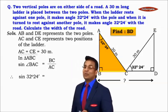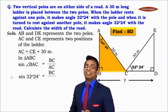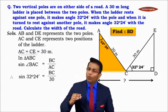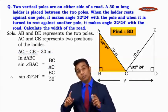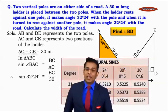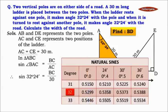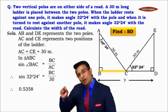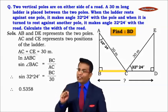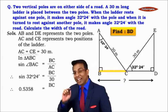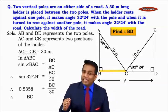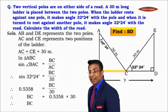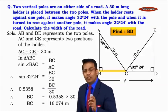Sine of 32 degrees 24 minutes = BC / 30. From the trigonometric table of natural sines, the row for 32 degrees and the column for 24 minutes gives the value 0.5358. Substituting: 0.5358 = BC / 30, so BC = 0.5358 × 30 = 16.074 meters.